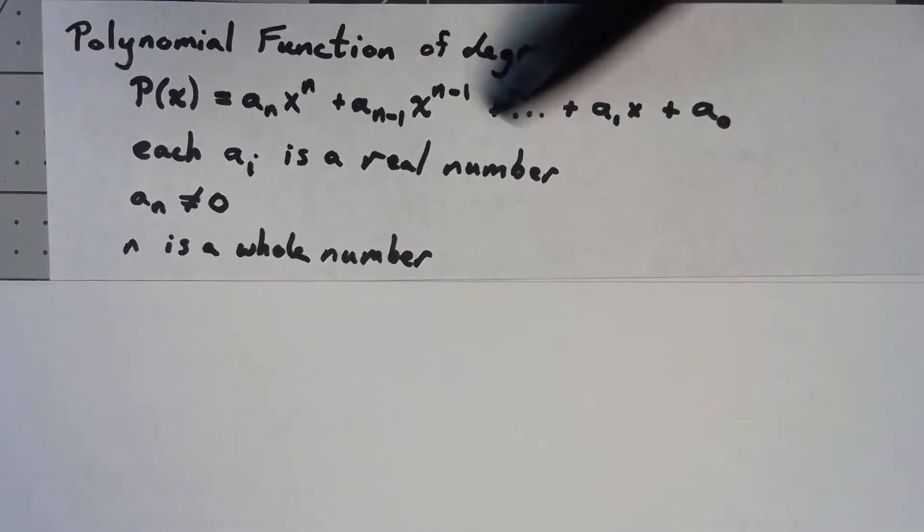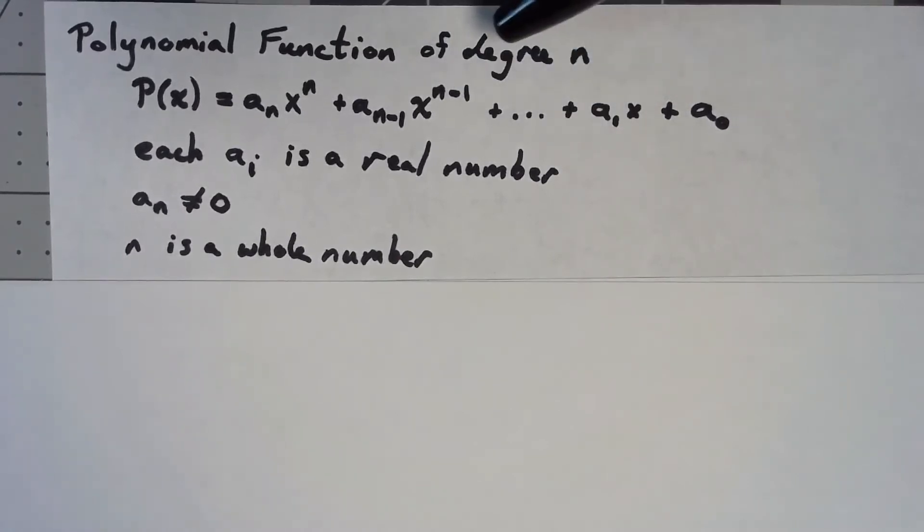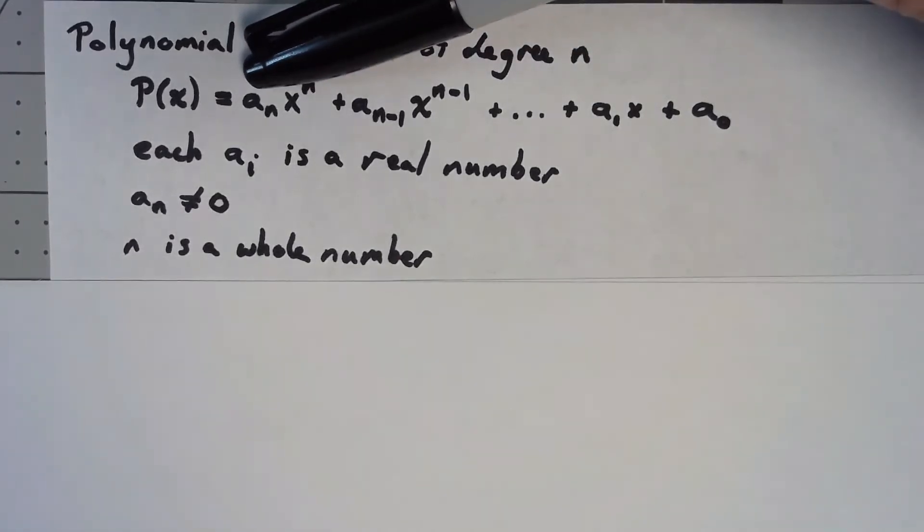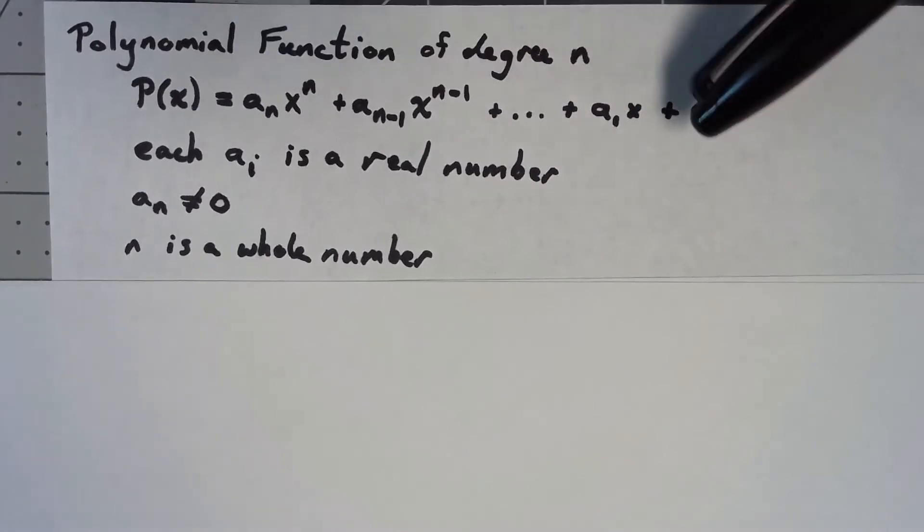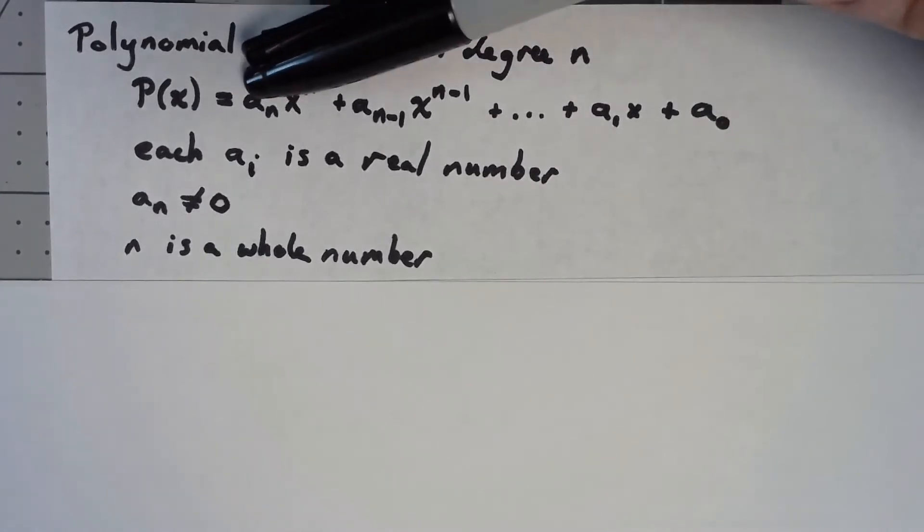Also for us to say that it has degree n, that first coefficient can't be a zero. Any of the other ones could be but that first one can't be.